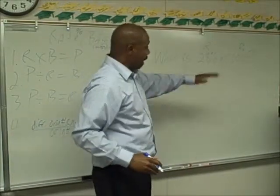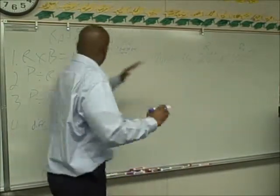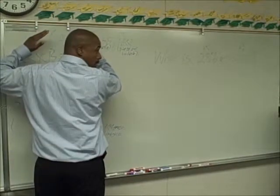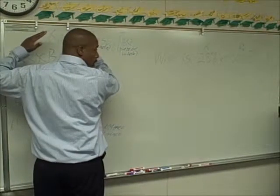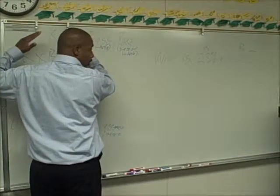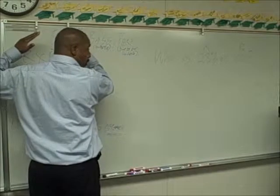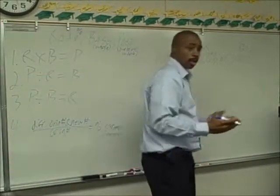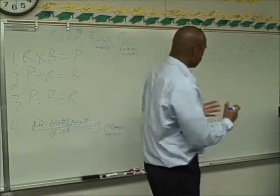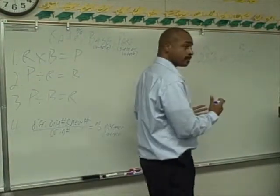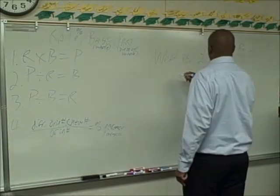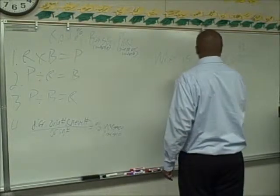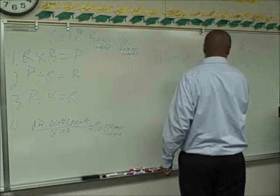I'm going to cover up these formulas. So if we have the rate and the base, we're always doing what? Multiplying. So what are we going to multiply? 28% times 1,050. Spell it out — what do I write?